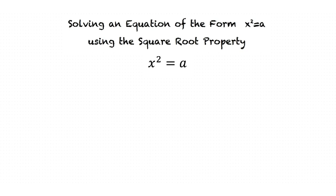Say we are given the equation x squared is equal to a. The square root property tells us that when a is negative the equation will have no real solutions because no real number multiplied by itself will result in a negative number.